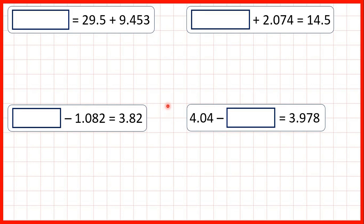Now, we have some missing number addition and subtraction problems, but this first question isn't really a missing number problem at all. We have something equals 29.5 plus 9.453. All we've got on the left of the equal sign is an answer box, and it doesn't matter whether the equal sign is at the start, like it is here, or at the end, like it usually is. We do the same thing.